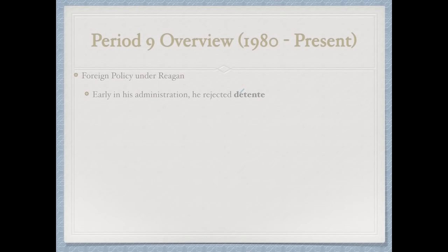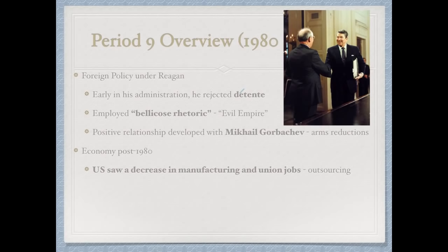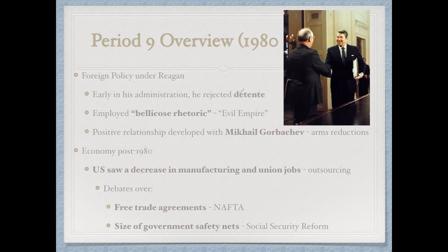Under Reagan's foreign policy, he early on rejected détente and used what the curriculum calls bellicose rhetoric — aggressive language — calling the Soviet Union the 'evil empire.' Later, he developed positive relationships with Soviet leader Mikhail Gorbachev and achieved some arms reductions. Post-1980, the US saw a decrease in manufacturing and union jobs and a continuation of outsourcing jobs overseas. Debates over NAFTA — the North American Free Trade Agreement, allowing no tariffs on goods traded between Canada, the US, and Mexico — and debates over the size of government safety nets like Social Security continued.